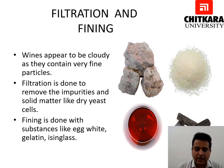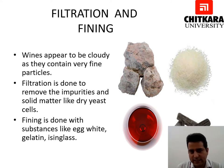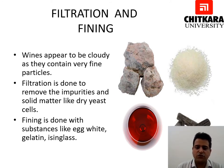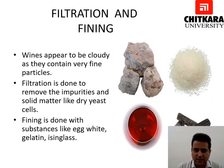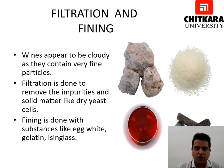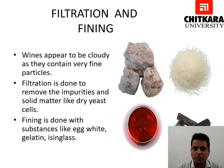The next step is filtration and fining. Wines appear cloudy at times as they contain very fine particles. Filtration is done to remove these impurities and solid matter like dry yeast cells. Fining is done with substances like egg whites, gelatin, or isinglass. Isinglass happens to be the bladder of the royal sturgeon fish. Various filtration and fining agents used for this procedure can be seen in the photograph.